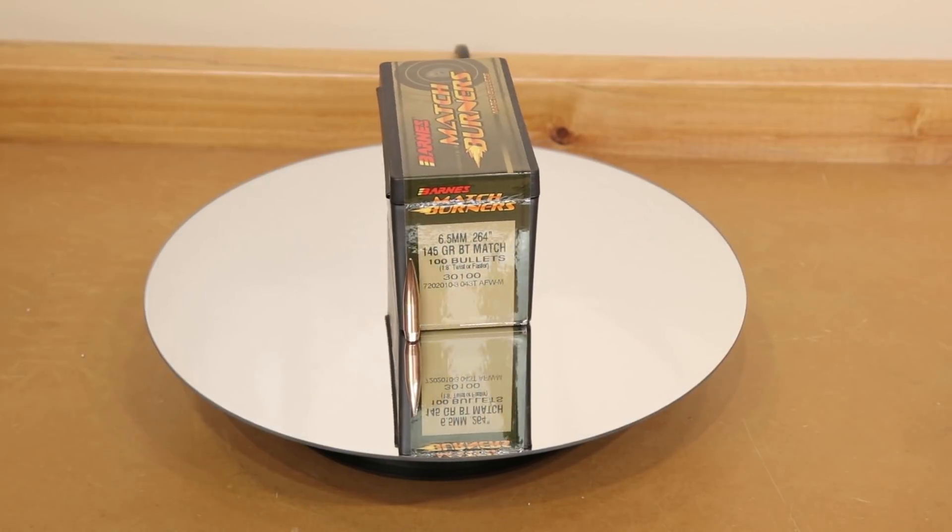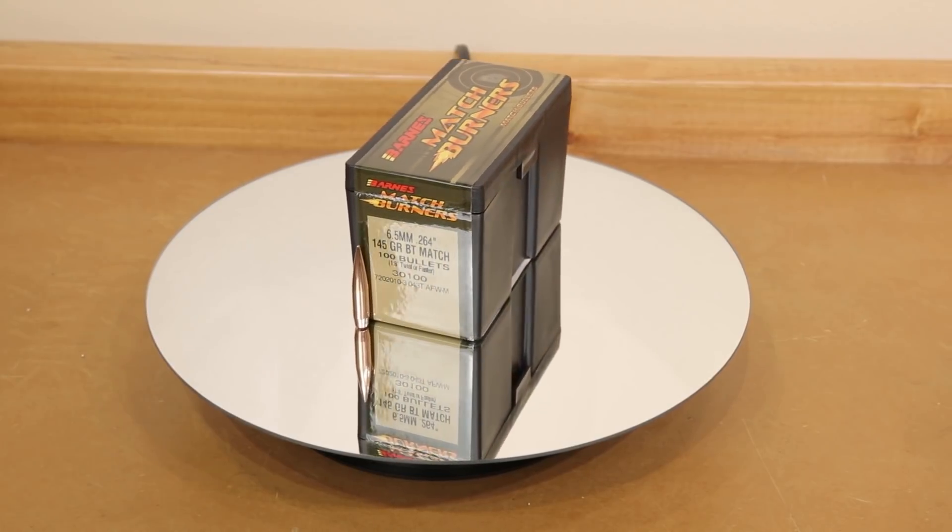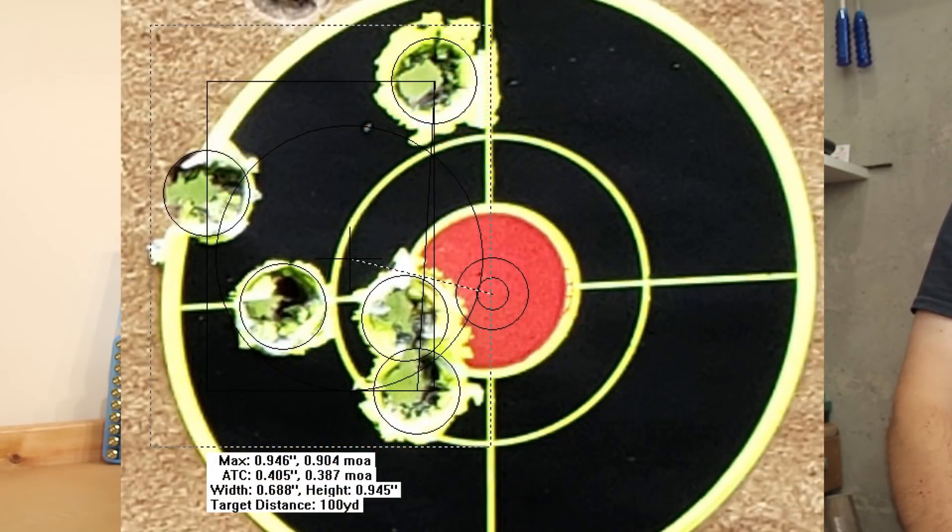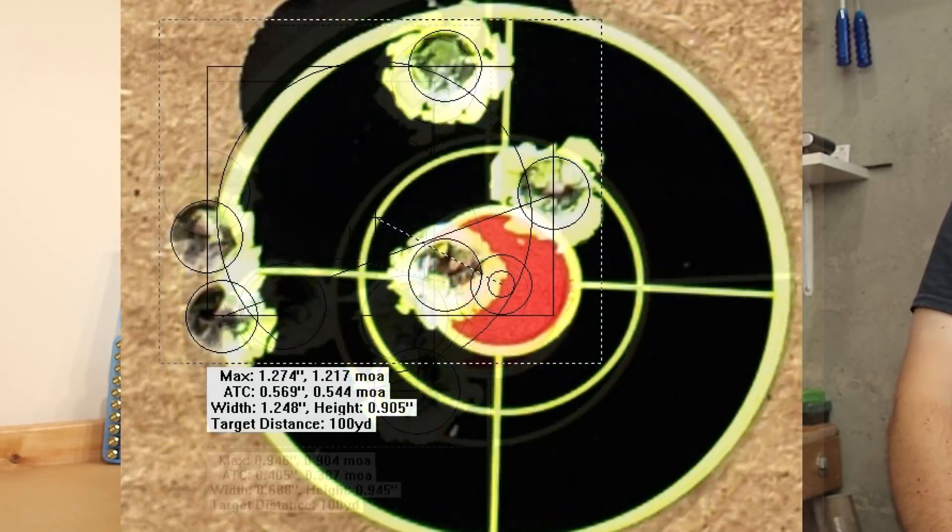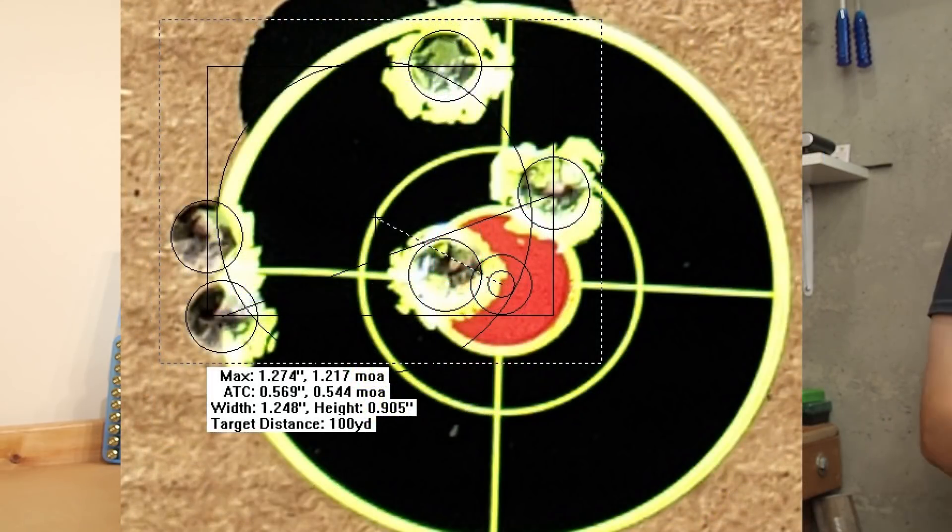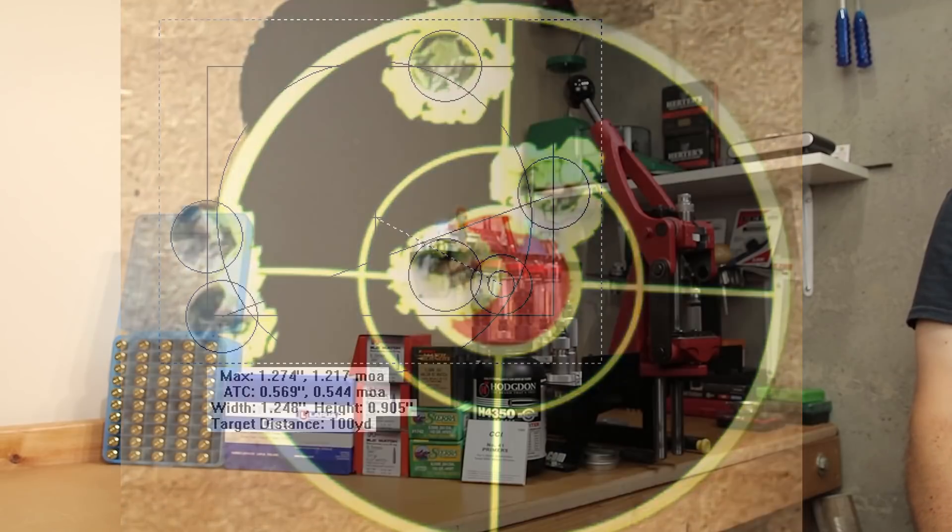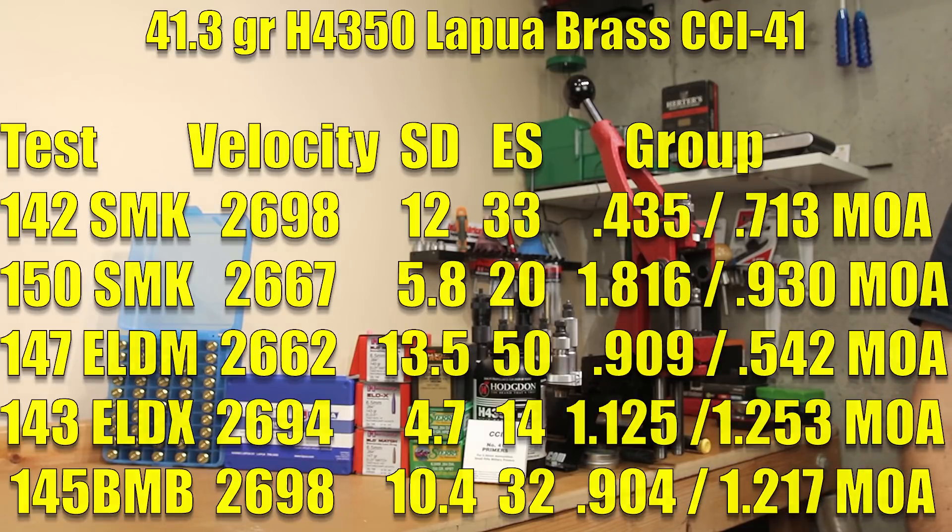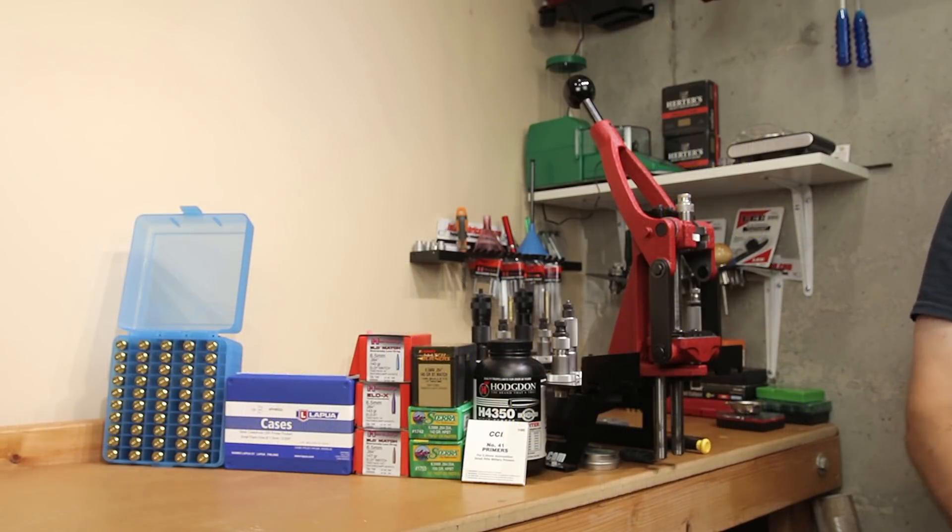Moving on to our 145-grain Barnes Matchburner, at 120 thousandths off the lands, our first group went into 0.904 MOA, and our second group went into 1.217 MOA. Groups not spectacular, however, 2698 feet per second was the velocity that we achieved. Our standard deviation was only 10.4 with an extreme spread of 32, but we have plenty of these left to test, so we'll certainly do some testing in our new barrel and see how these guys end up working out.